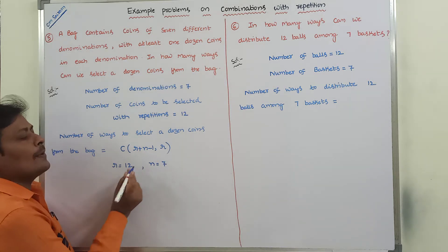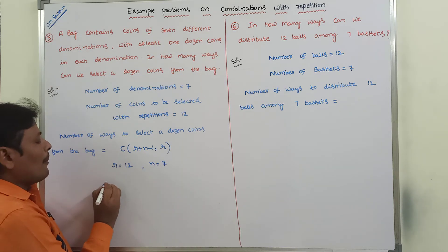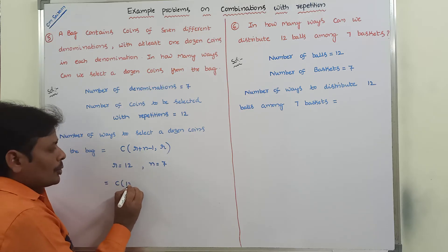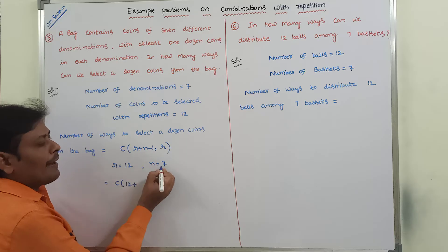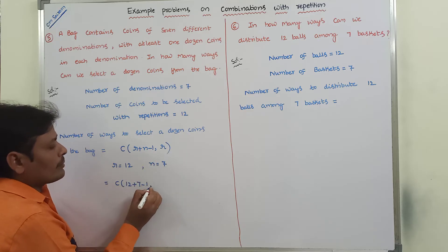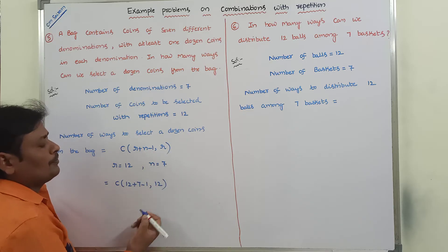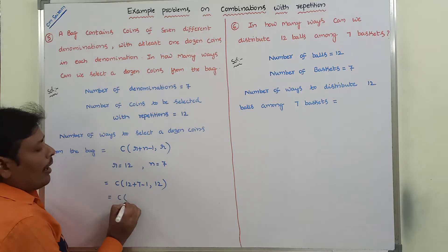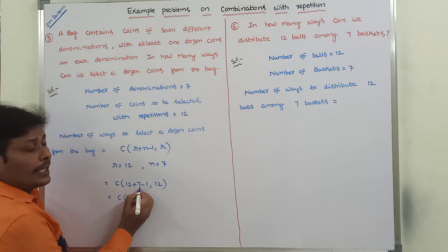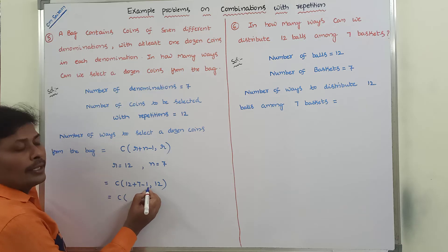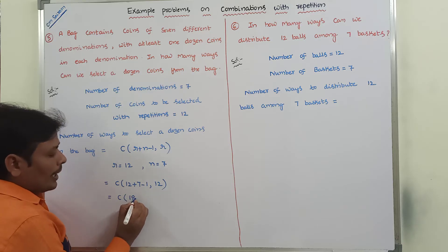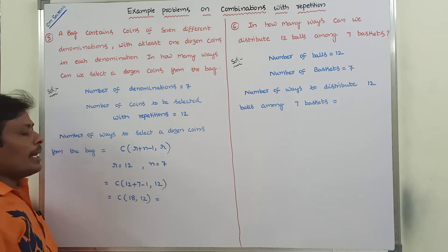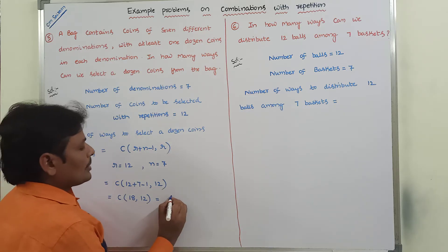Substituting these values into the formula: C(r + n − 1, r) = C(12 + 7 − 1, 12) = C(19 − 1, 12) = C(18, 12).